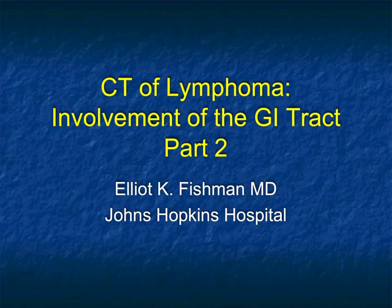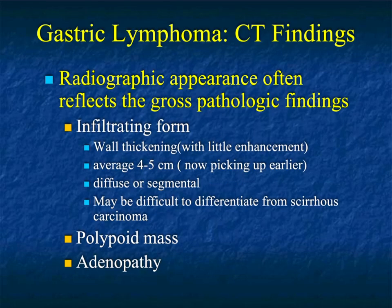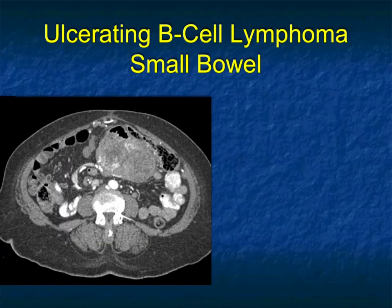Welcome back to part two of CT of Lymphoma, Involvement of the GI Tract. When we finished up part one, we were looking at gastric lymphoma, then small bowel lymphoma. I showed you a few examples of various appearances of small bowel lymphoma — how you can get bowel obstruction — and a nice case of involvement of the ileum extending into the cecum.